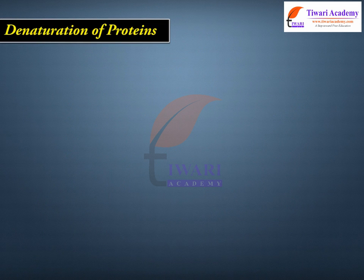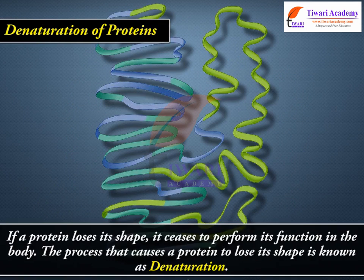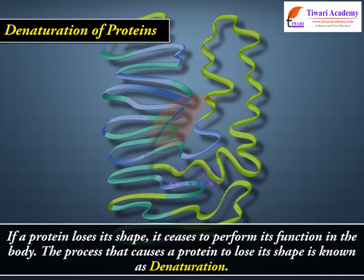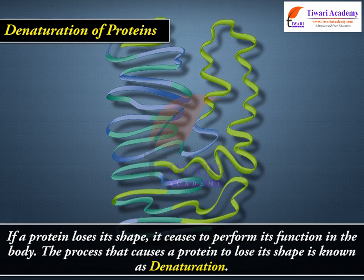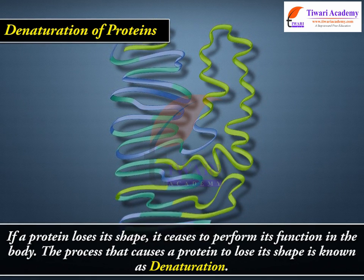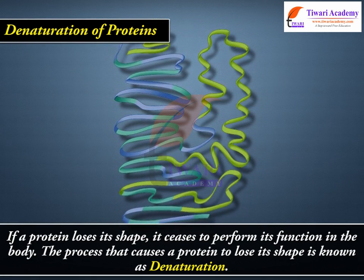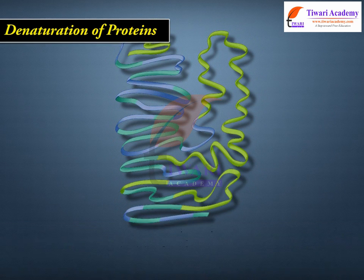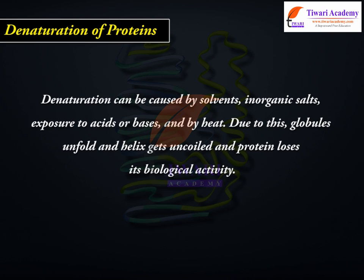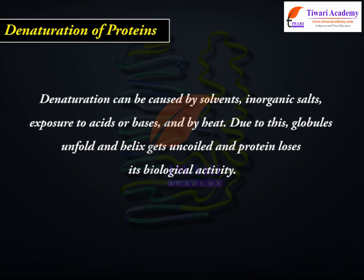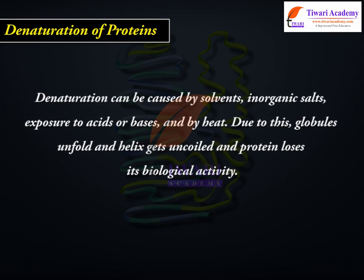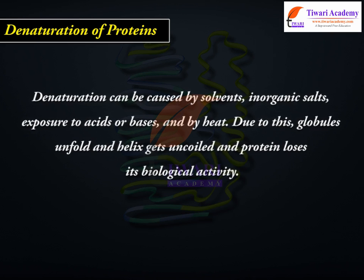Denaturation of proteins. If a protein loses its shape, it ceases to perform its function in the body. The process that causes a protein to lose its shape is known as denaturation. Denaturation can be caused by solvents, inorganic salts, exposure to acids or bases, and by heat.